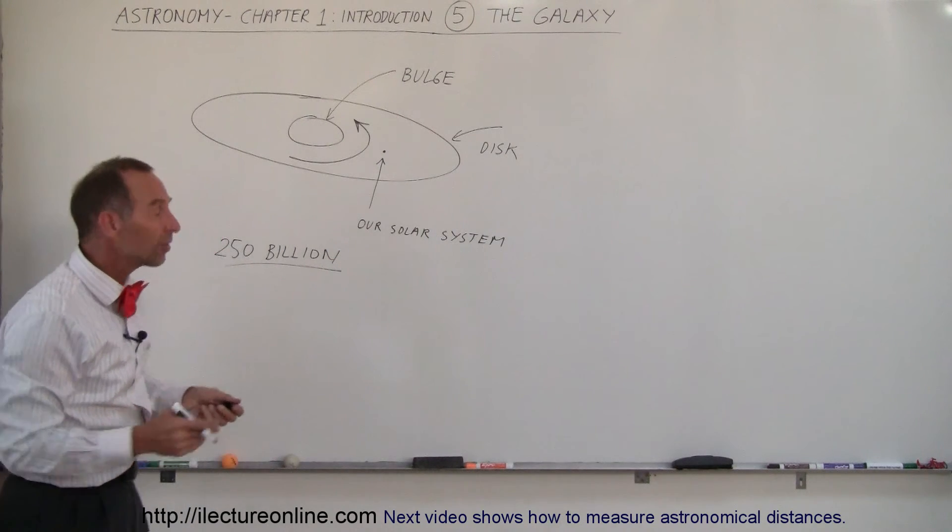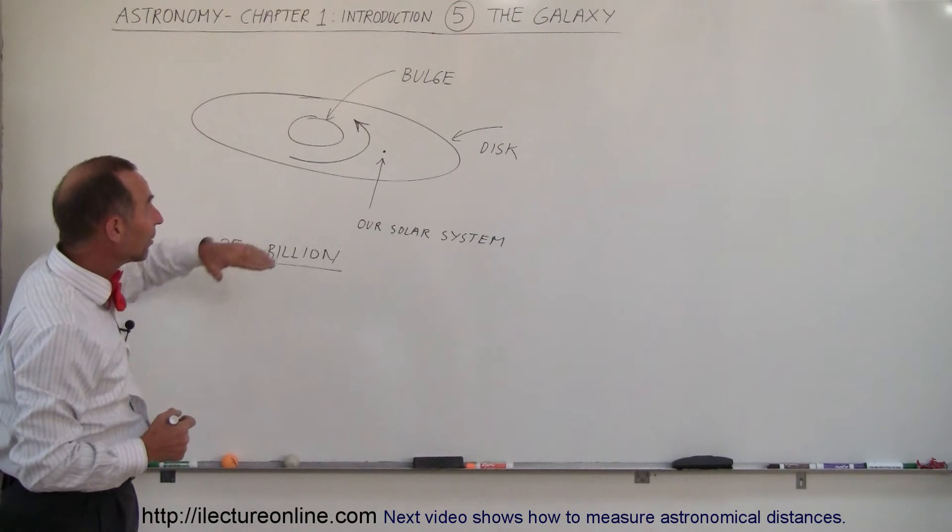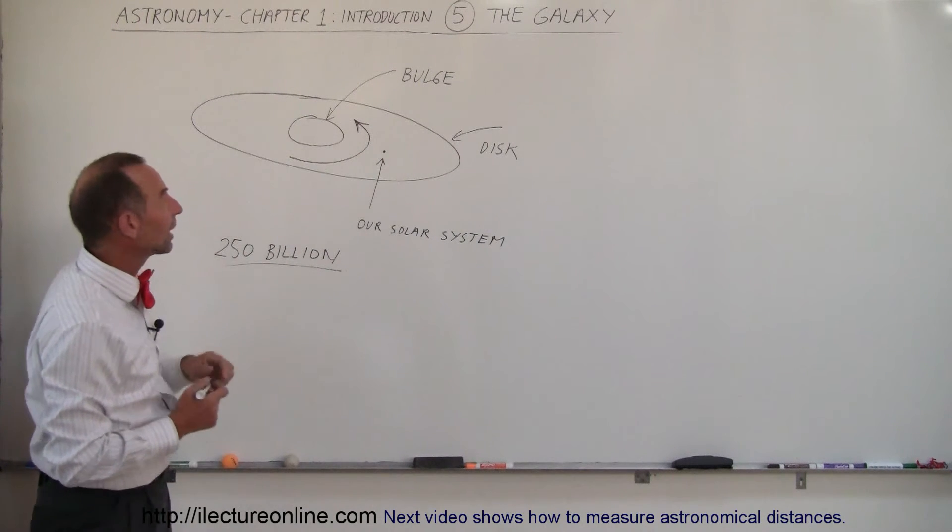Some are bigger than the Sun, some are smaller than the Sun, many of them have planets like our Sun does, and they're situated either in the disk or in the bulge of the galaxy.